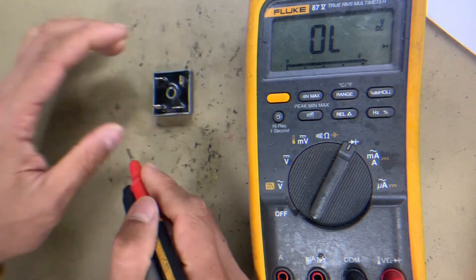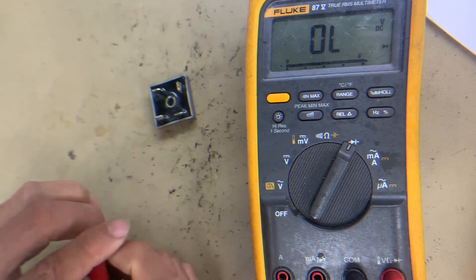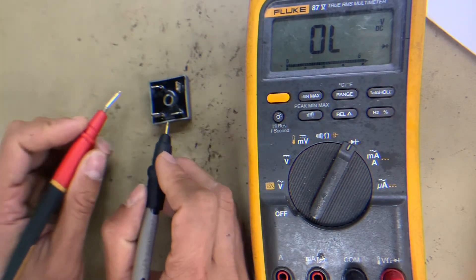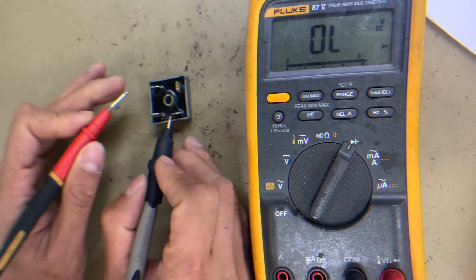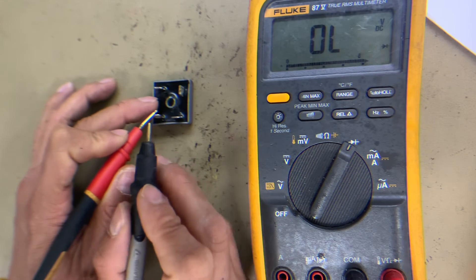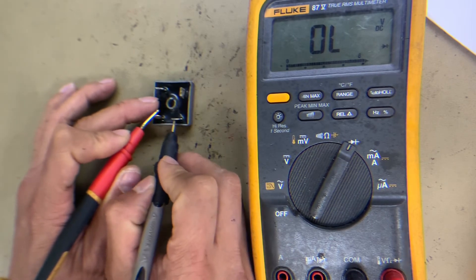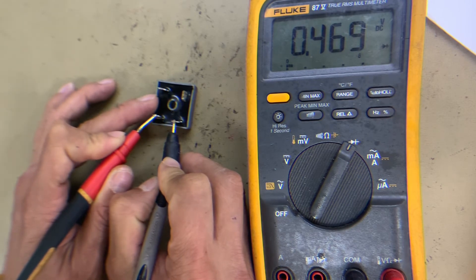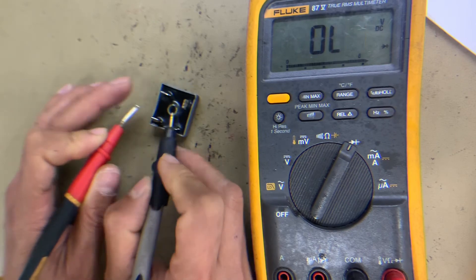Let's proceed to the fourth diode, which is this diode. Anode here, cathode here. Red probe is on the anode, this pin, and then the black probe on the cathode, this pin. The reading is 0.469. Let's inverse, there should be no reading.